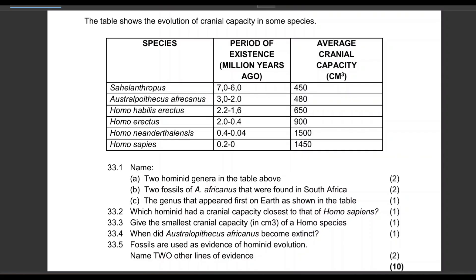The table below shows the evolution of cranial capacity in some species. You need to analyze the table — there is a list of species in the first column, the second column is the period of existence in million years ago, and the third column is the average cranial capacity in centimeter cubes.